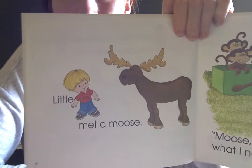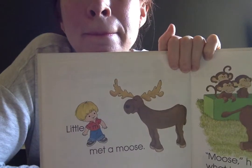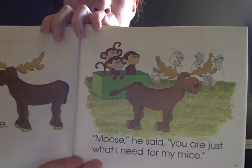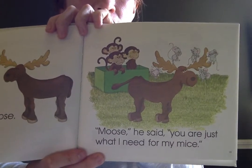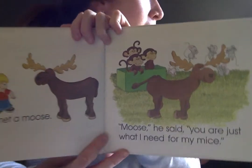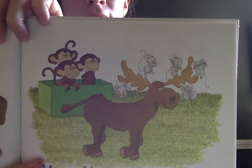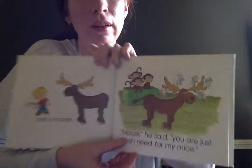Little M met a moose. Moose. Moose, he said. You are just what I need for my mice. How? What is he doing? He's letting the mice climb all over his antlers.